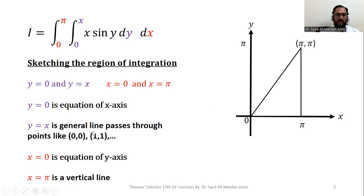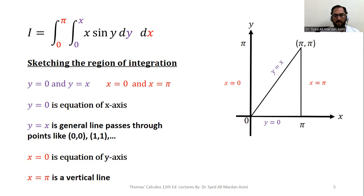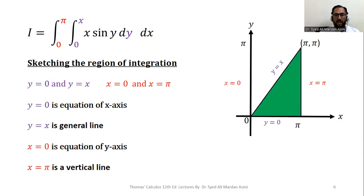We join the two points (0,0) and (pi, pi) to get the line y equal to x. The four boundaries are: y equal to 0 (x-axis), x equal to 0 (y-axis), x equal to pi (vertical line), and y equal to x (diagonal line through same-value coordinates). This completes the sketching of our region. We highlight the region of integration in green, as it is important to identify it clearly. This concludes today's lecture. Thank you for watching — if you like this video, please subscribe to my channel.